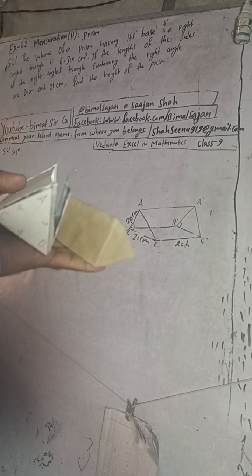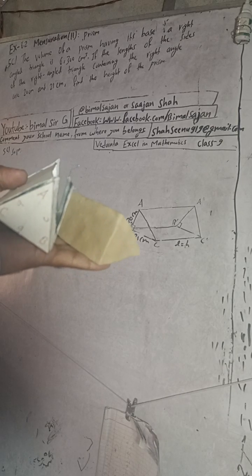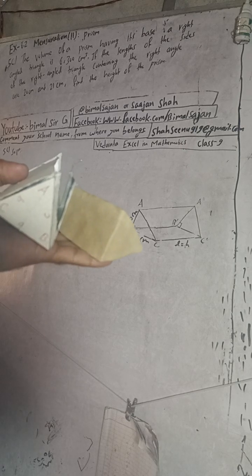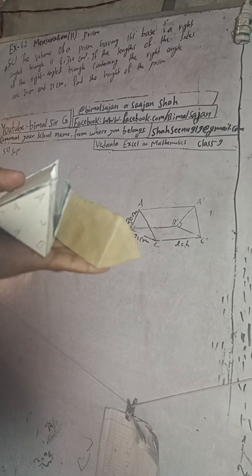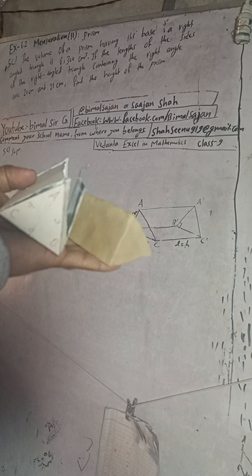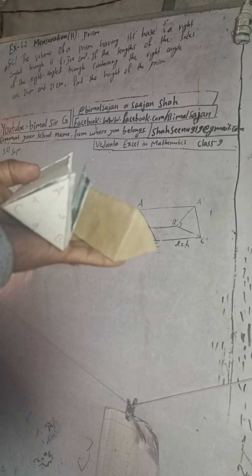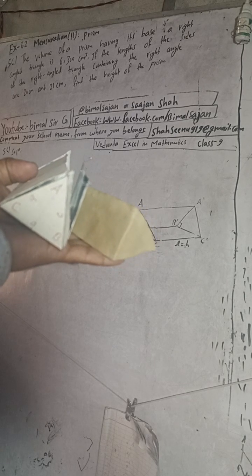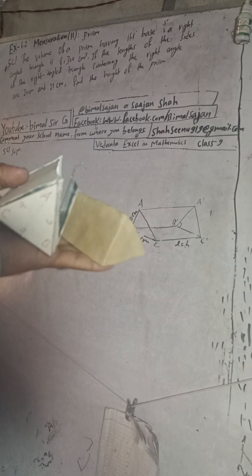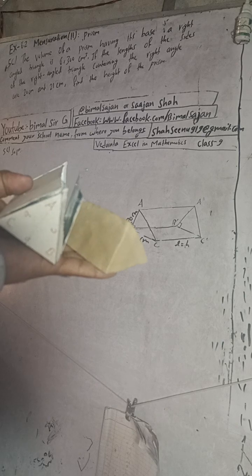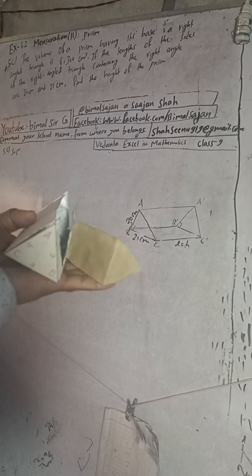Hi Class 9 and 10 students, welcome back to Bimal Sir's YouTube channel. This is question number 5C, Exercise 6.2, Mensuration, second part - Prism. Vedanth Excel in Mathematics Class 9. The question is: the volume of a prism having its base a right-angled triangle is 6300 cm³. If the length of the sides of the right angle triangle containing the right angle are 20 cm and 21 cm, find the height of the prism.